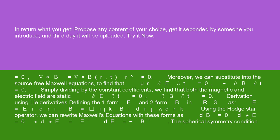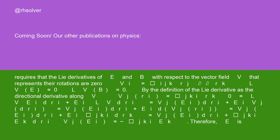The spherical symmetry condition requires that the Lie derivatives of E and B with respect to the vector field V that represents their rotations are zero: V^i equals epsilon_ijk r^j del/del r^k. L_V E equals zero, L_V B equals zero. By the definition of the Lie derivative,